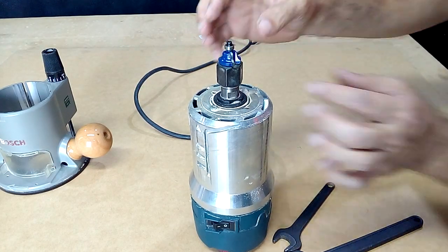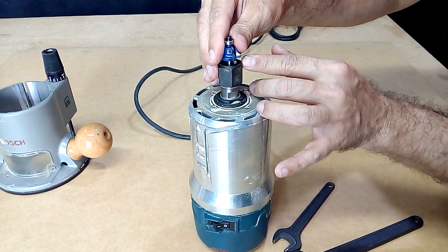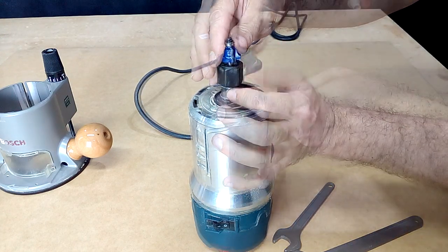We must enter the router bead completely, then we are going to raise it about 5mm and then tighten it firmly.